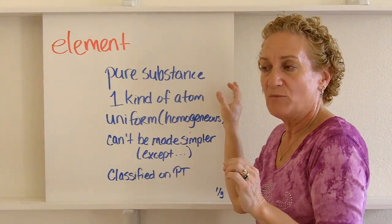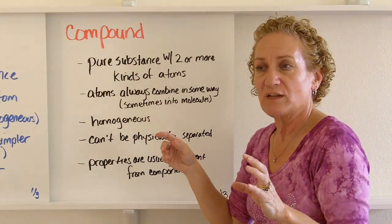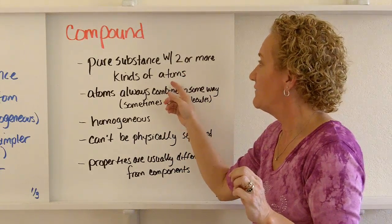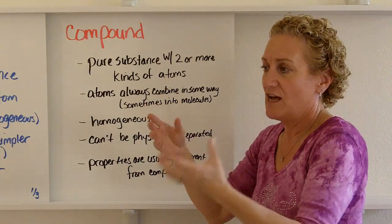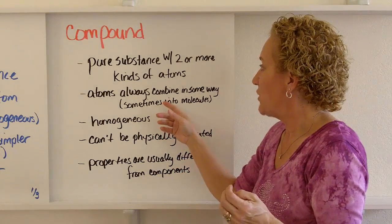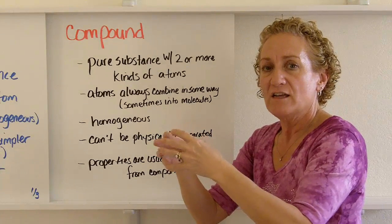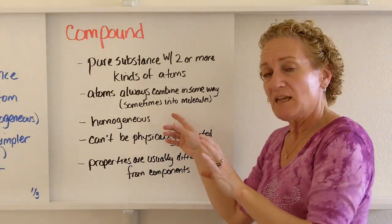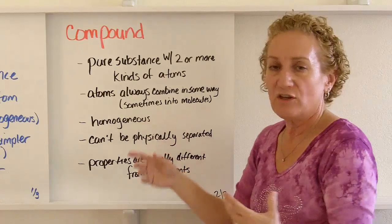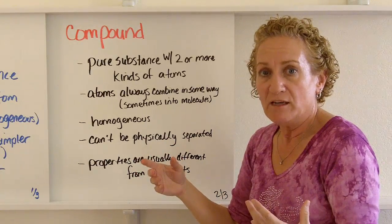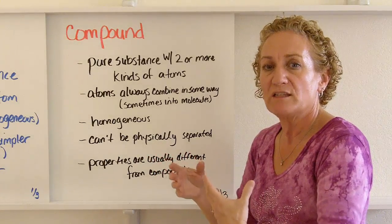Once we have our elements, we combine them to form compounds. Compounds are also a pure substance, but they're made of two or more different kinds of atoms. For example, hydrogen and oxygen form water. The atoms always combine in some way — it's not just that they're sitting next to each other, they have to have a combination with one another. Sometimes they combine into molecules, but not always. There are other ways for them to combine as well.